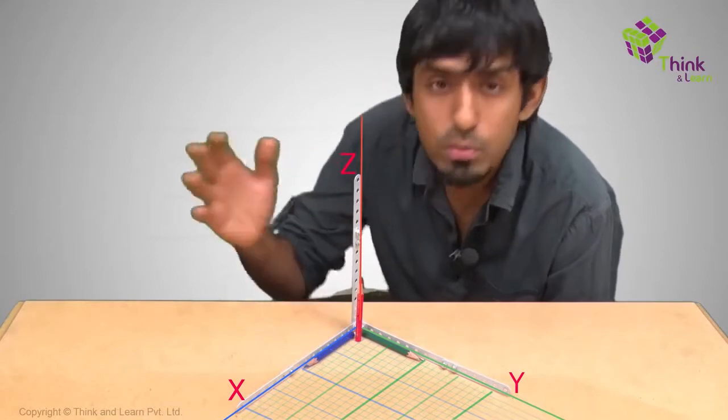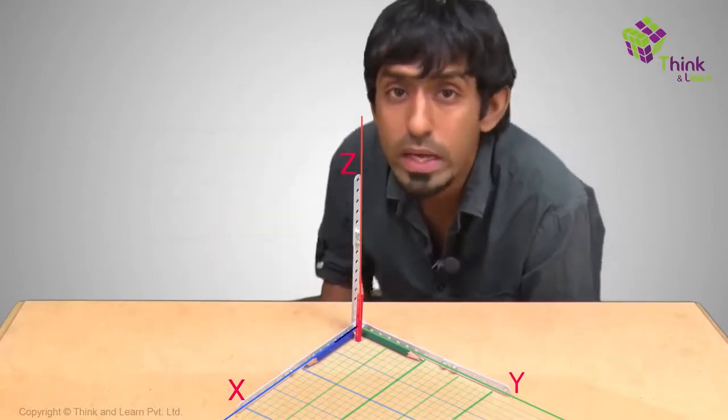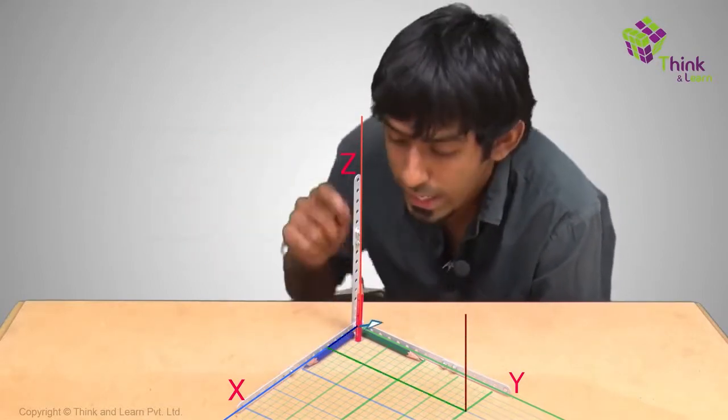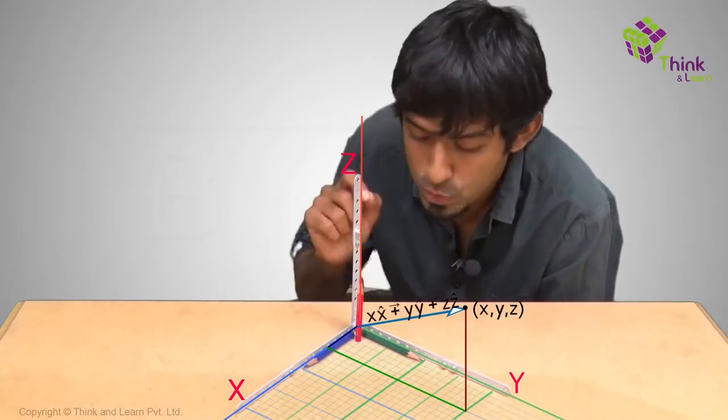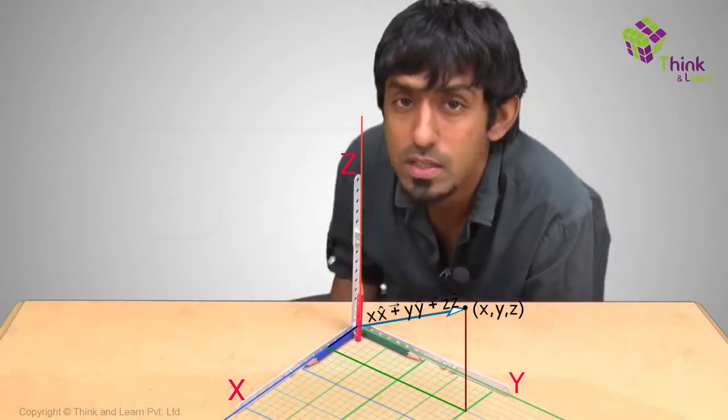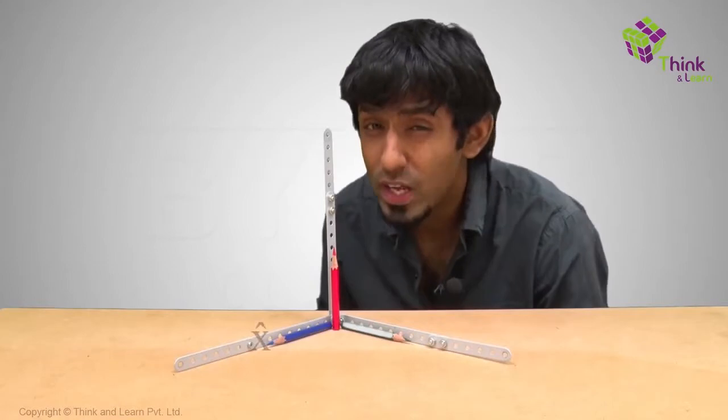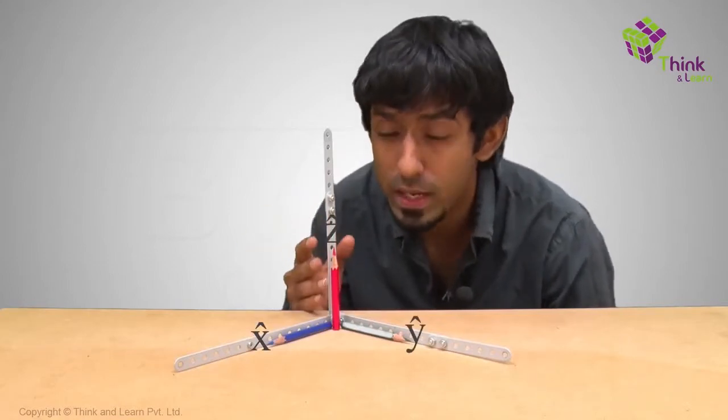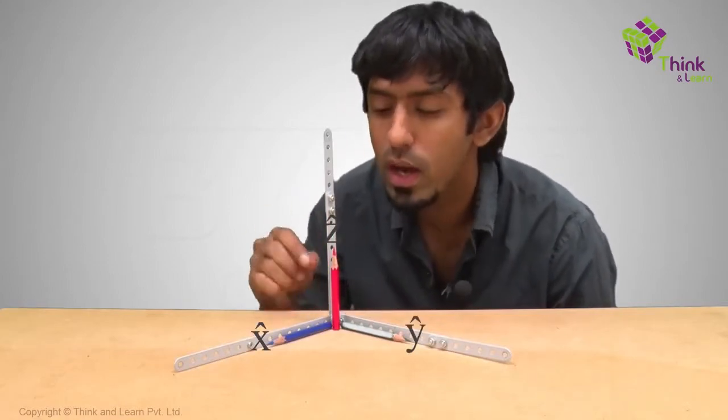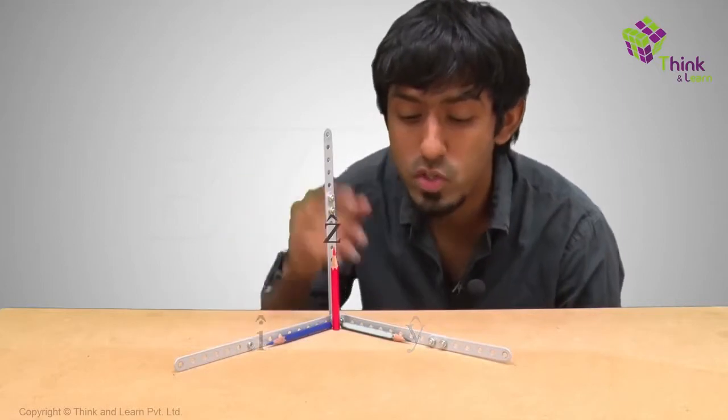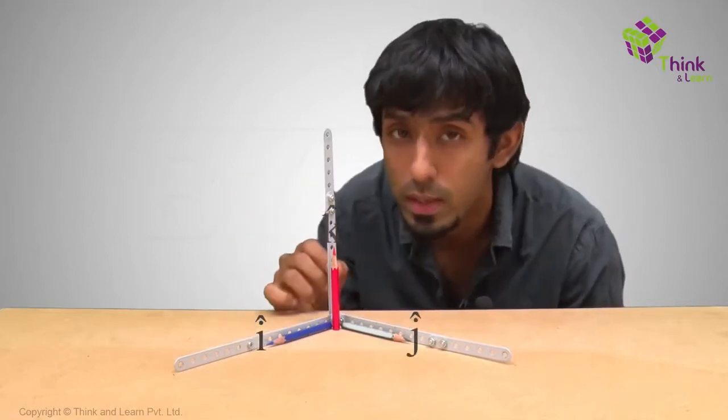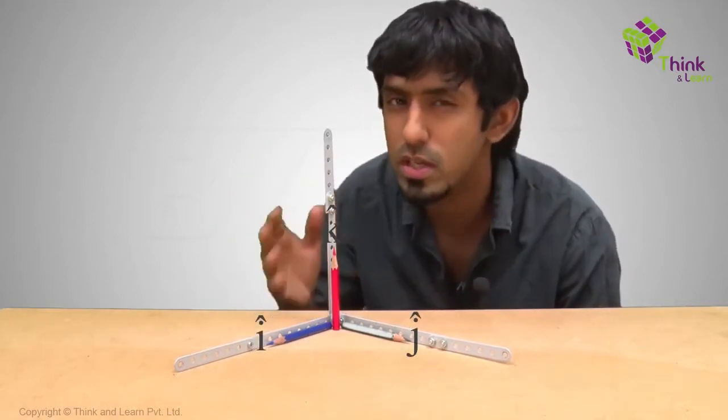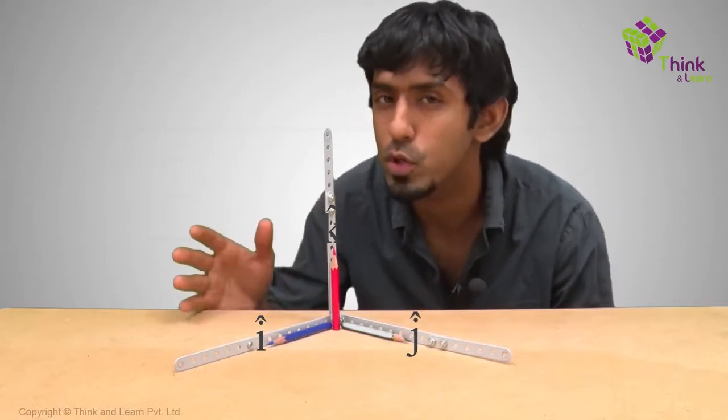How is that? So whatever I told before, right? A point x, y, z now becomes x times x cap plus y times y cap plus z times z cap. Now what I called x cap, y cap, and z cap, I can also call i cap along the x axis, j cap along the y axis, and k cap along the z axis. It's just another name to refer to the same unit vectors.